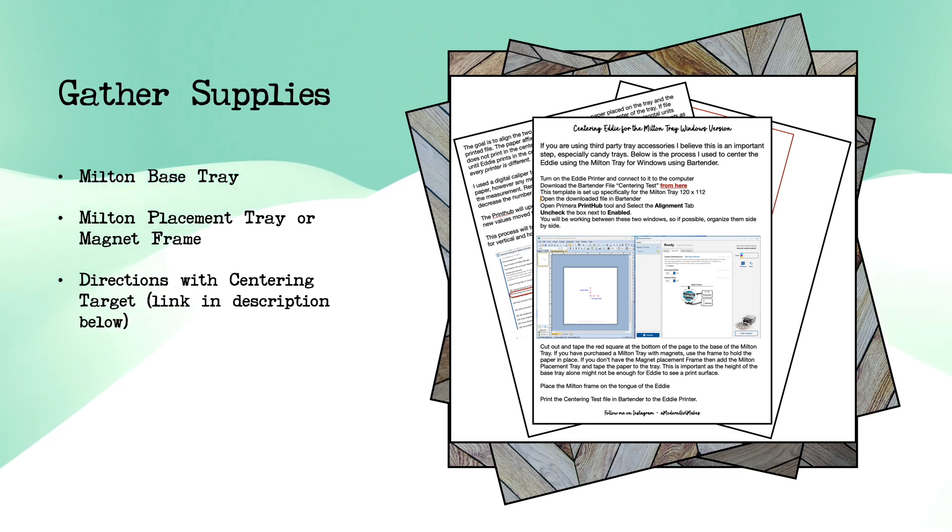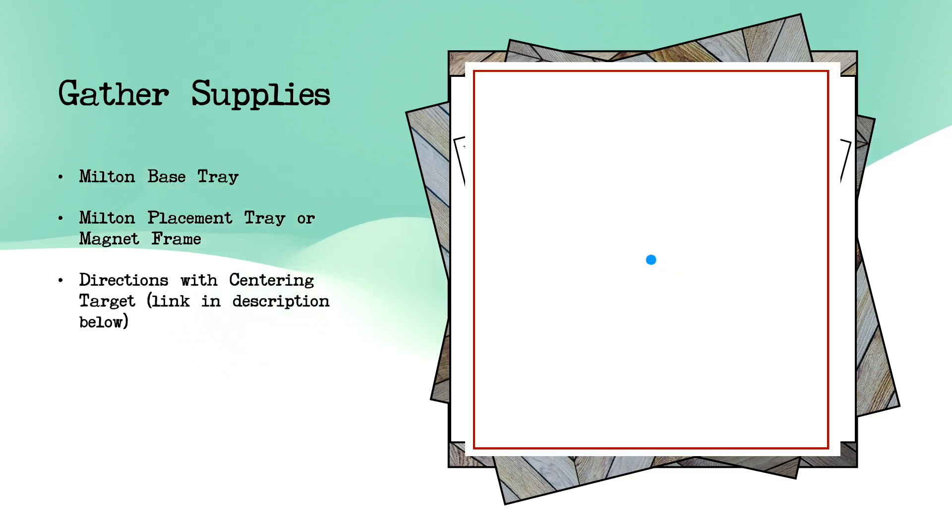You will also need to download a couple of documents. The first one that you see here is the step-by-step that I'm going to be going through. Some people like to read, others like to watch. You can do it either way. You will need to download this so that you can print out on your regular inkjet or laser printer. This rectangle, this red outlined rectangle with the blue circle in the middle, that's going to show us exactly where center is on the tray that we're working with.